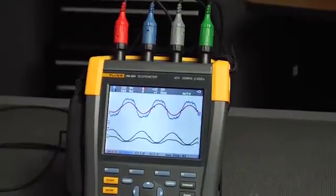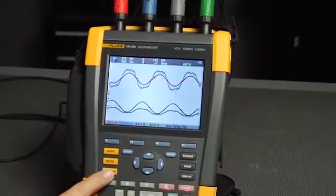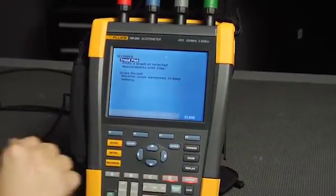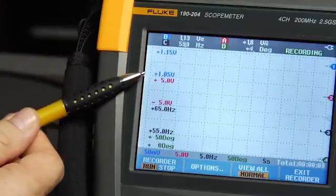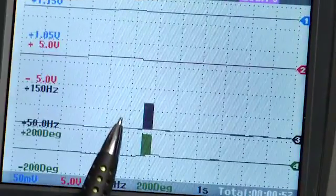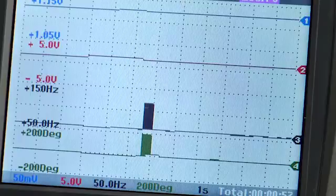With four isolated, independent inputs, Trendplot can log all four input signals simultaneously, capturing deviations like dropouts and drift over time.